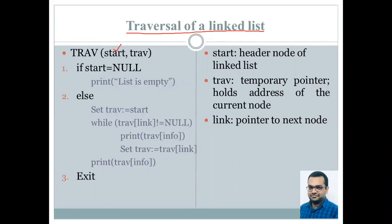This is the address of the first node and this is a traversal pointer that we have declared in our program. If the start's value is null, we simply print that the list is empty and the program exits.